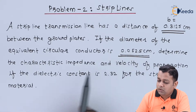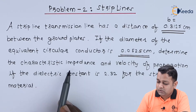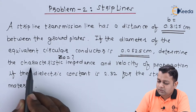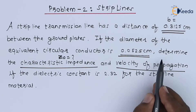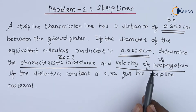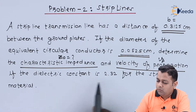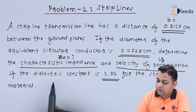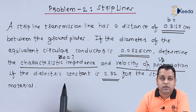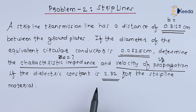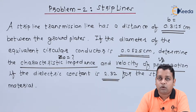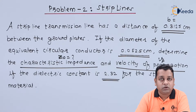What is asked in this problem? We need to determine the characteristic impedance Z0, and along with that, the velocity of propagation, denoted Vp. A further given value is the relative dielectric constant for the insulating material between the conductive materials for the strip line. Let us note the given details with proper symbols before applying the formulae.